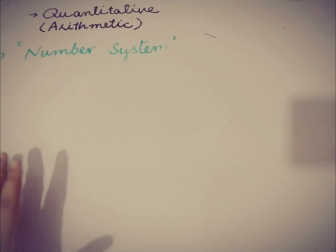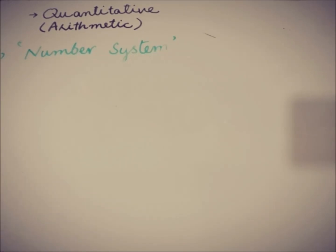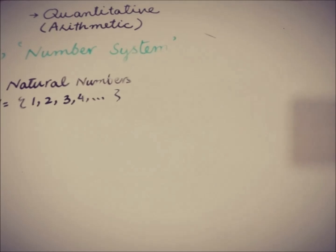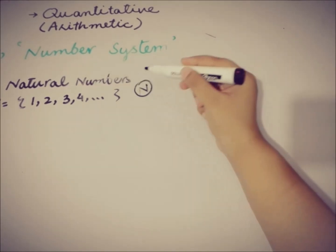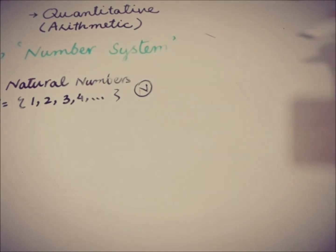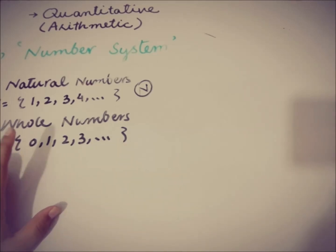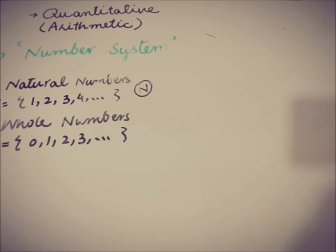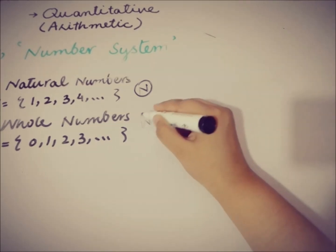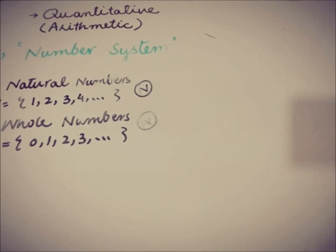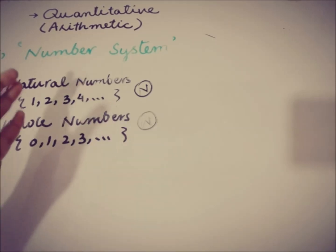Firstly, we'll revise our number systems. The natural numbers start from 1, 2, 3, 4, and so on, and are represented by the letter N. The whole numbers are just like the natural numbers but with the addition of 0, so whole numbers start from 0, 1, 2, 3, 4, and are represented by W. So N is for natural numbers and W is for whole numbers.